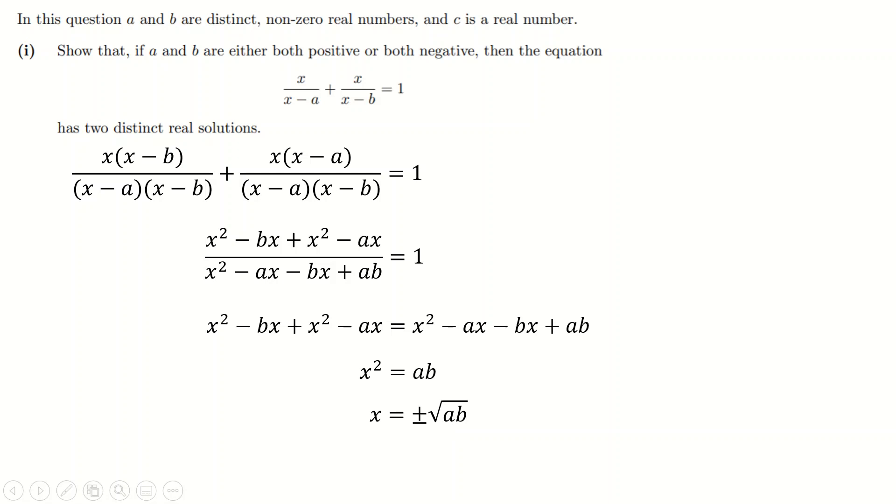However, if you stop there, you'll lose a couple of marks because you need to be really careful. Sometimes here you don't have any solutions, at least not any real ones. If a was -1 and b was 1, you'd be doing the root of -1, which you can't do for a real solution. So you need to say here carefully: this has two solutions, √(ab) and -√(ab), as long as either a and b are both positive (because positive times positive is positive), or a and b are both negative (because negative times negative is also positive).